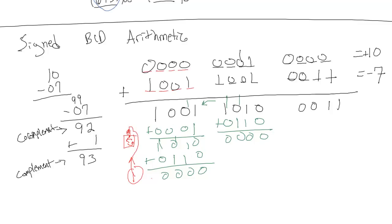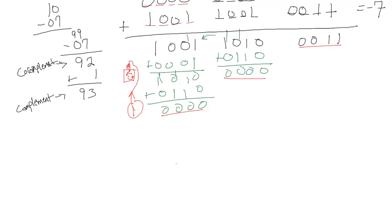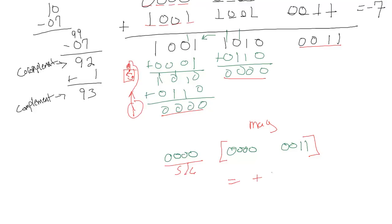Our answer uses the same number of field sets as the input — 3 sets. The result is 0000 0000 0011. The sign/complement field is 0, meaning the magnitude field directly gives the answer: positive 3. So 10 minus 7 equals 3.